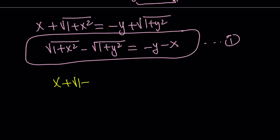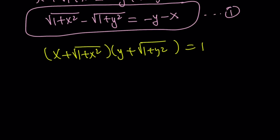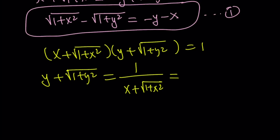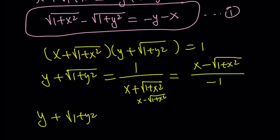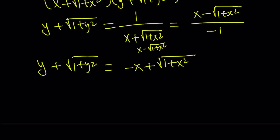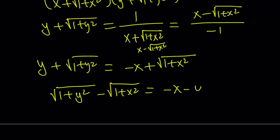Let's rewrite the original problem: x plus the square root of 1 plus x squared, multiplied by y plus the square root of 1 plus y squared, equals 1. We're trying to find x plus y. Let's isolate the y term — you can write it as 1 over that expression. By going through the same process of multiplying by conjugates, we multiply by x minus the square root of 1 plus x squared on top and bottom. That gives us the expression on top, and negative 1 on the bottom. So we get y plus the square root of 1 plus y squared equals negative x plus the square root of 1 plus x squared. Bringing the square root of 1 plus x squared to the left and y to the right gives us Equation 2.